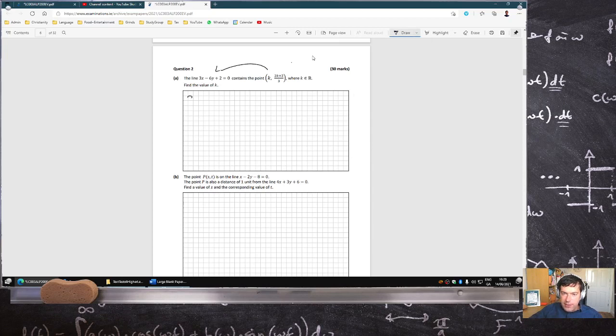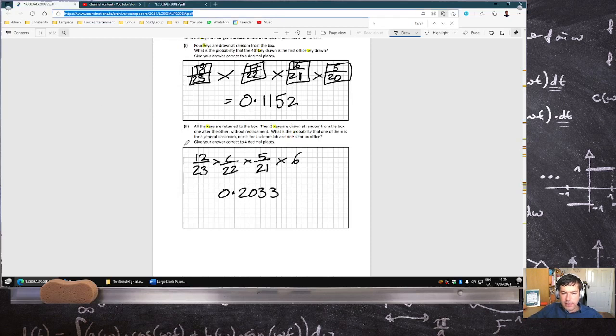Driving me nuts now at this point. So I sub that in. I get 3k minus 6y, which is 2k plus 2 over 3, plus 2 equals 0. 3 goes into that twice. 3k minus 2, that's minus 4k, minus 4 plus 2 equals 0. So you get k equals minus 2. I think that's what I said last time as well.